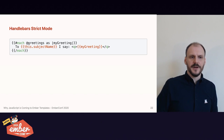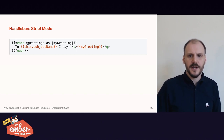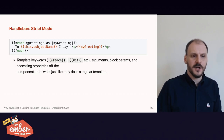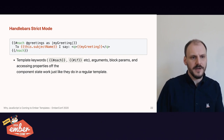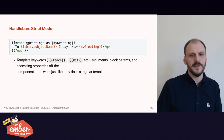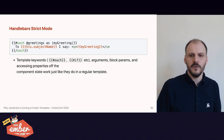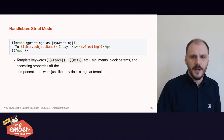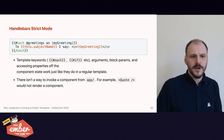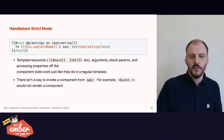Here's an example of what a Handlebars strict mode template could look like. It uses template keywords like each, arguments like @greetings, block params, and accesses component state — all just like a regular template. However, there's no way to invoke a component from the app folder; if you wrote an angle-bracket invocation, it would simply be an error. This brings us to the crux: for static templates to be useful, we need a static solution for bringing other components into the template's scope.